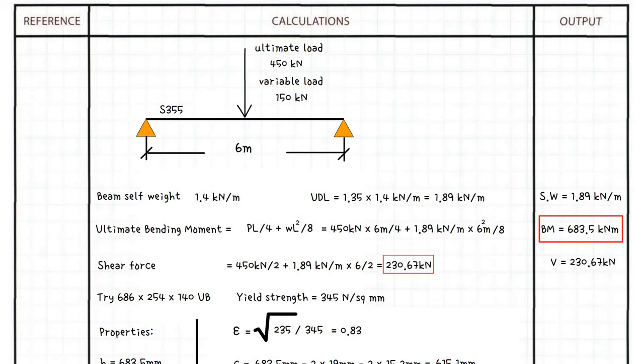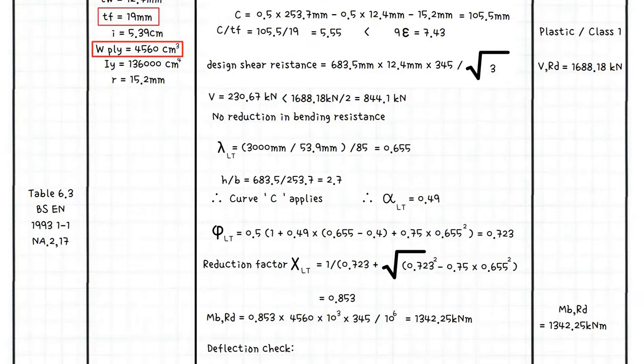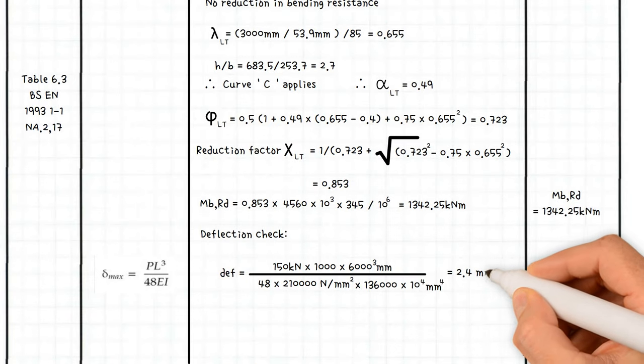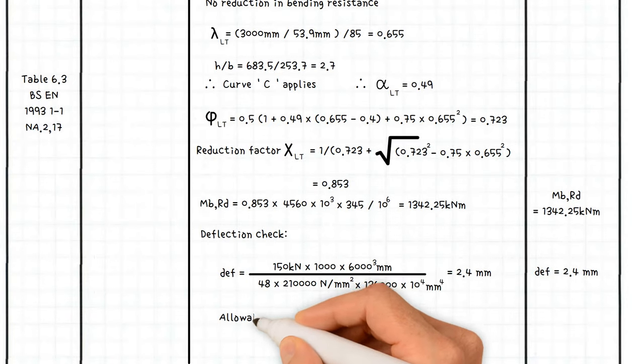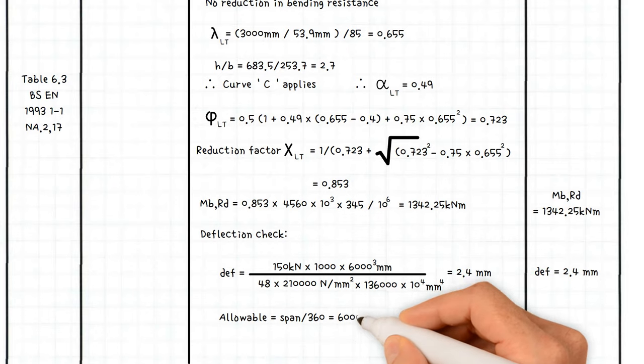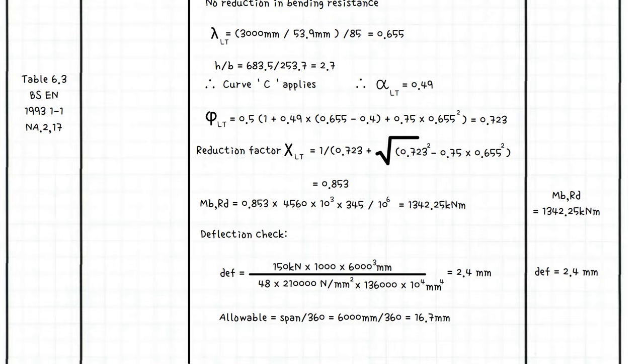Finally, we are required to undertake deflection check. For concentrated load, the deflection is equal to this equation, which equals 2.4 millimeters. It should be limited to the span over 360, which equals 16.7 millimeters. As a result, 16.7 millimeters is greater than 2.4 millimeters. Therefore, the selected section is deemed satisfactory.